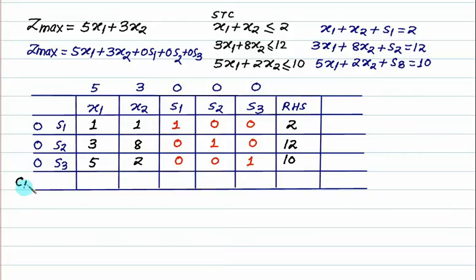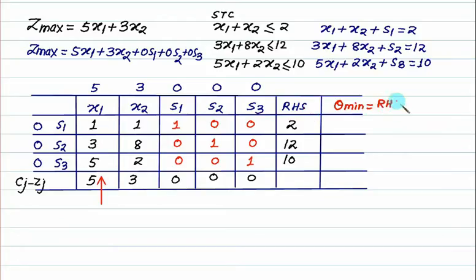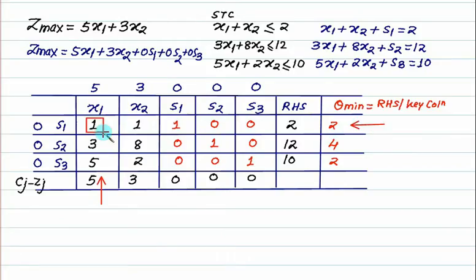Now we find Cj minus Zj. Since all basic variables have Cj of 0, the Zj row is 0, so Cj minus Zj gives 5, 3, and 0 for the respective columns. Since this is a maximization problem, we select the key column as the maximum positive value, which is 5 for x1. We then find theta minimum by dividing RHS by the key column: 2 divided by 1 is 2, 12 divided by 3 is 4, and 10 divided by 5 is 2. There is a tie, so we break the tie arbitrarily, selecting the first row — that element is our key element.